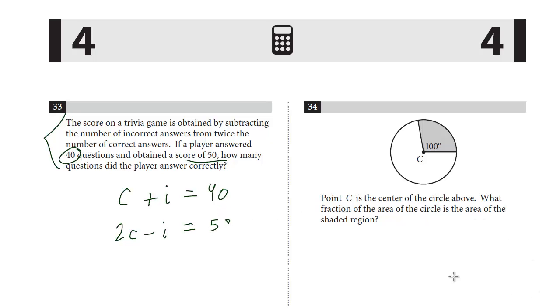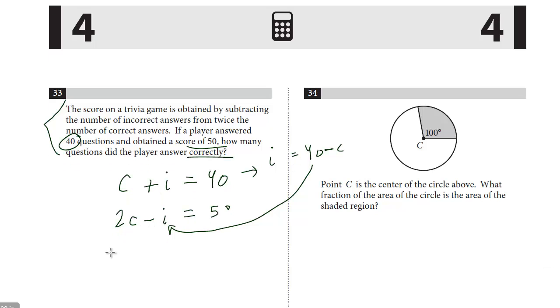Now you could use elimination. I think in this case I would just use substitution because we want to solve for how many correct answers. With this single variable one, we can express I in terms of C. We can say that I equals 40 minus C. And then for this I here, we're going to plug in 40 minus C.